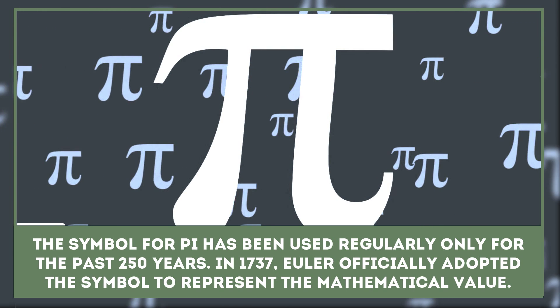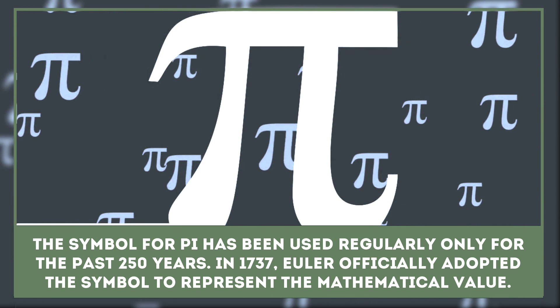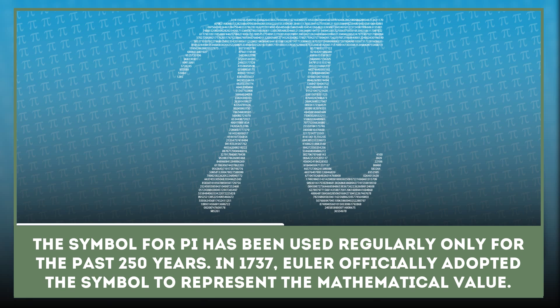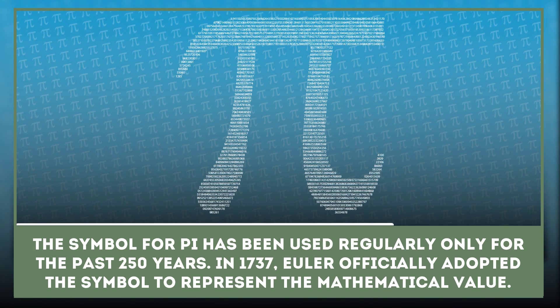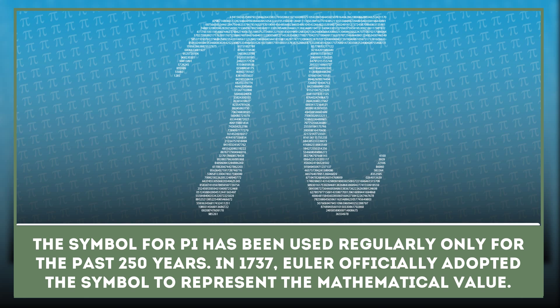The symbol for pi has been used regularly in its mathematical sense only for the past 250 years. In 1706, an English mathematician introduced the Greek alphabet pi to represent the said value.